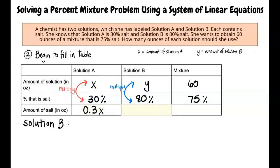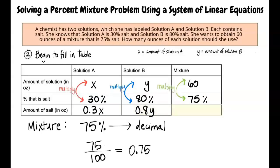The amount of salt in solution B will be y times 80%. Converting this percentage to a decimal, we divide 80 by 100 and write 0.8. Multiplying this by y, we can input 0.8y for this box. For the new mixture, the amount of salt in the solution will be 60 ounces times 75%. 75% converted to a decimal is 0.75. Multiply 0.75 times 60 and write 45, which we can input into this box.